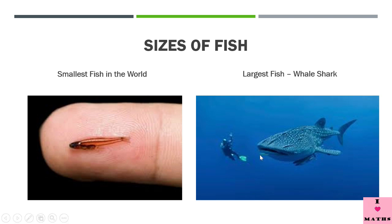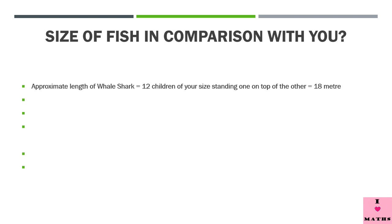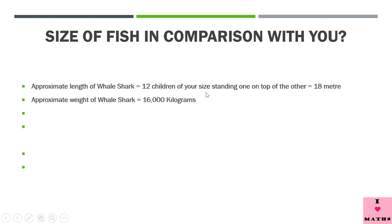A whale shark can be as long as 18 meters. To give you a fair idea: if 12 children of your size stand one on top of the other, that tower will be approximately 18 meters high. So imagine 12 of your friends standing on top of one another — that is how long a whale shark is.